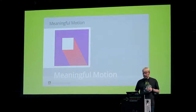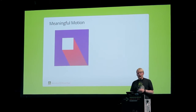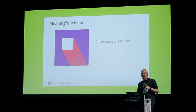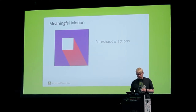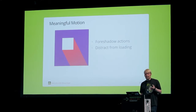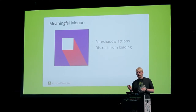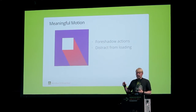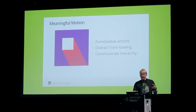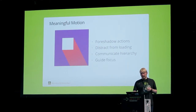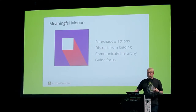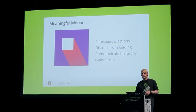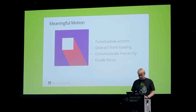Meaningful motion is what makes Material Design really Material Design, because it makes the material behave like material. Every animation should have a reason — animations shouldn't be there for eye candy, but should be useful. Motion animations can foreshadow actions, or distract from loading data. For example, window transitions: when you press an item inside a list and it animates to the detail screen, you won't notice the detail screen is loading data. Motion also communicates hierarchy and guides focus — when a new element becomes visible and it's important, animate it in so the user sees it.